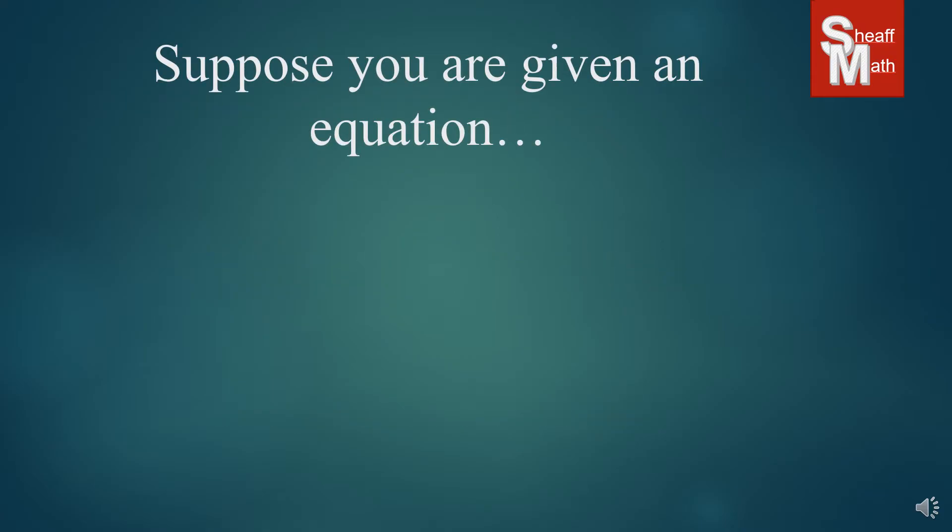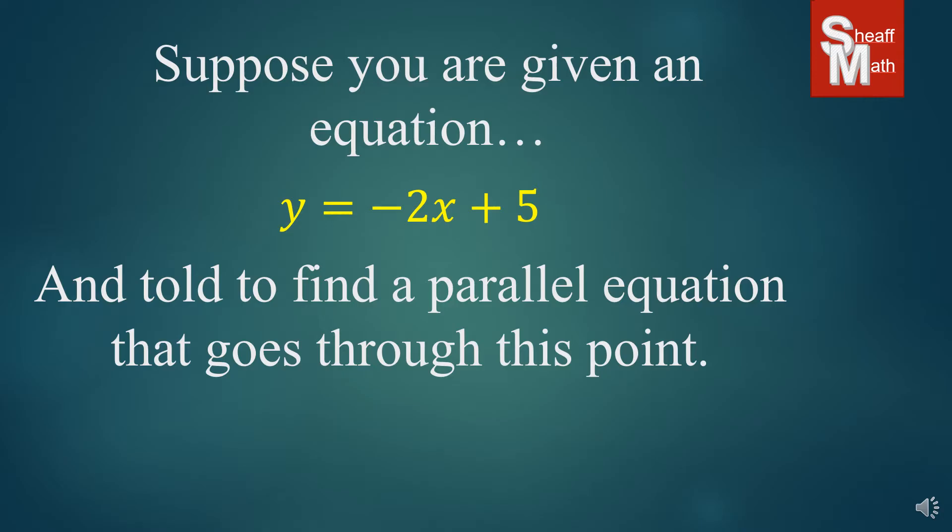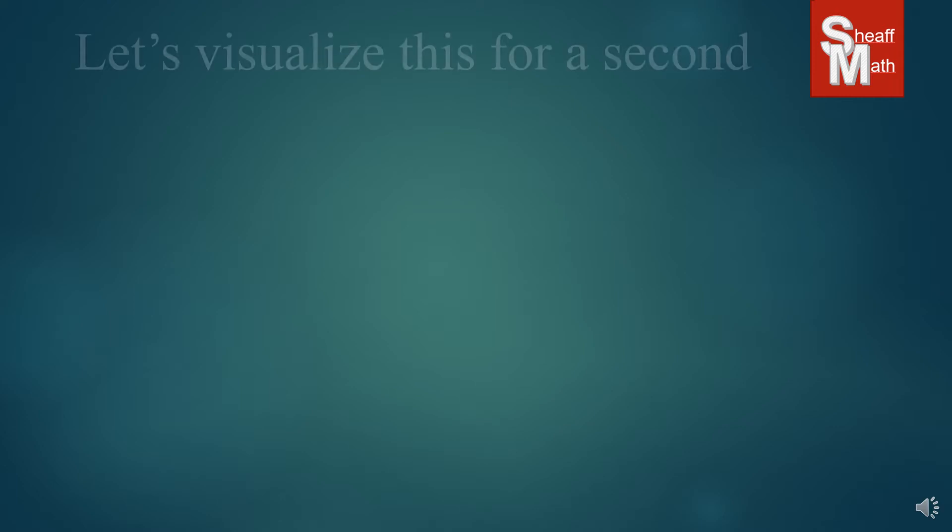Suppose that you're given an equation, y equals negative 2x plus 5, and you're told to find a parallel equation that goes through this point, 3, 4. Now, what does that really mean? I'm going to have you visualize what that is. Let's take a look at those numbers again.